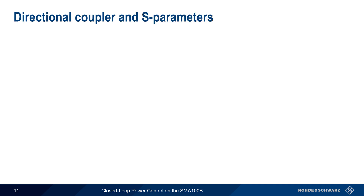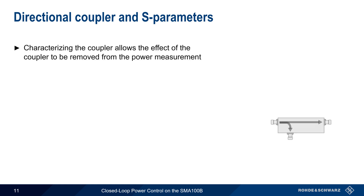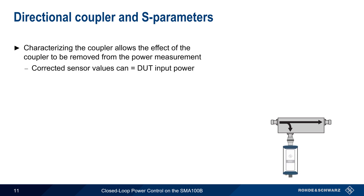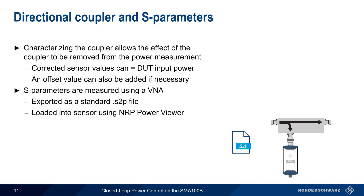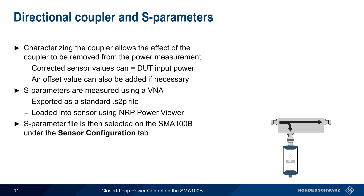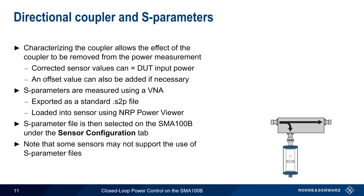Now let's look more closely at the role of the directional coupler in closed-loop power control. If we characterize this coupler, we can remove the effect of the coupler on the power measurement, and the corrected sensor reading will then display the same power as the power seen at the DUT input. An additional offset value can also be added if needed, to account for any fixed loss or gain between the coupler output and the DUT. We characterize a coupler in the form of S-parameters measured using a Vector Network Analyzer or VNA, and these S-parameters are exported as a standard S2P file. This file is then loaded into the sensor using the free NRP Power Viewer software package, and the appropriate S-parameter file is selected under the Sensor Configuration tab. Please note that some NRP sensors may not support the import of S-parameter files.